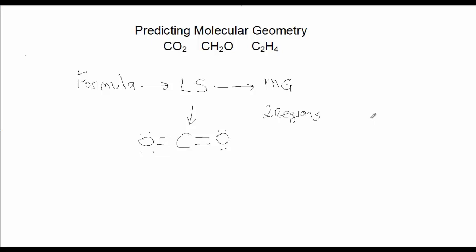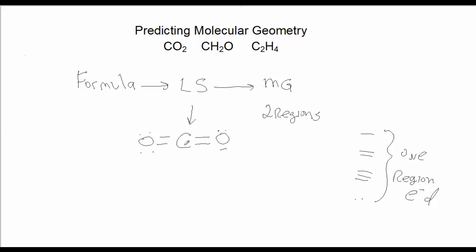Regions of electron density include a single bond, a double bond, a triple bond, or a lone pair — each of these is one region of electron density. So in the case of CO2, we have two double bonds, giving us two regions of electron density. Looking at a reference in your book, you'll see that when there are two regions of electron density in this fashion, the predicted molecular geometry is linear.